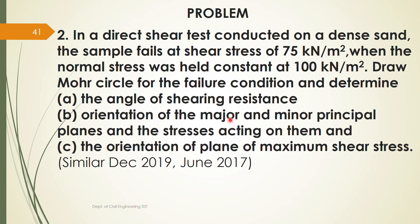We need to draw the Mohr circle and find the angle of shearing resistance φ, which is the angle of internal friction. We also need to find σ₁ and σ₃ — the major and minor principal stresses — and the orientation of the plane of maximum shear stress. A similar question was asked in December 2019 as well as in June 2017.